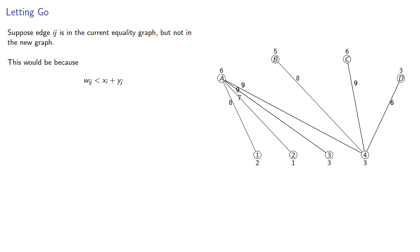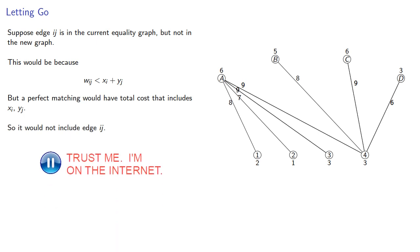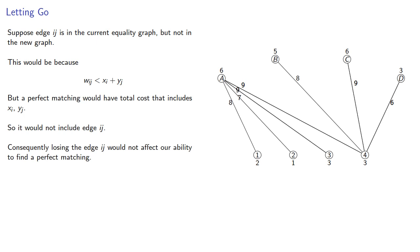But a perfect matching would have a total cost that includes both xi and yj, so it would not include edge ij. Consequently, losing the edge ij would not affect our ability to find a perfect matching.